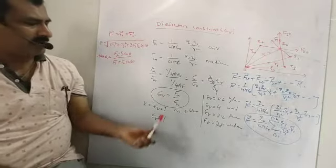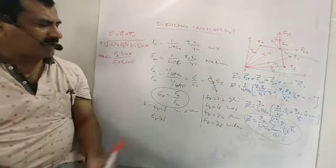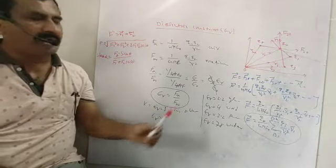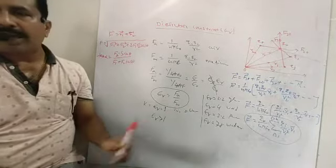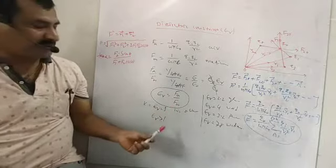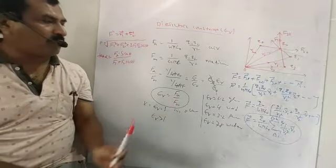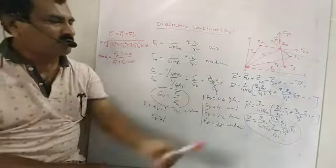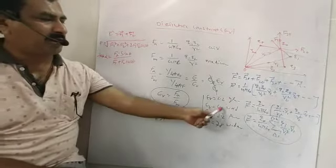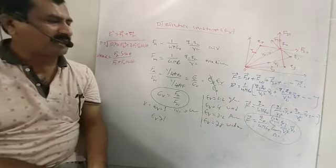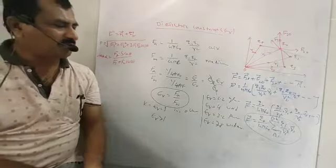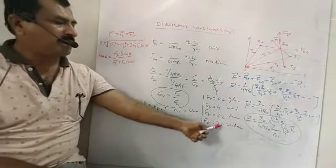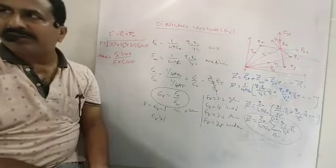The dielectric constant K, equal to the relative permittivity epsilon r, has a value of 1 in air or free space. Other than free space, the value of epsilon r is greater than 1. For example: epsilon r equals 2.2 for glass, epsilon r equals 4 for wood, epsilon r equals 3.2 for paper, and epsilon r equals 78 for water.